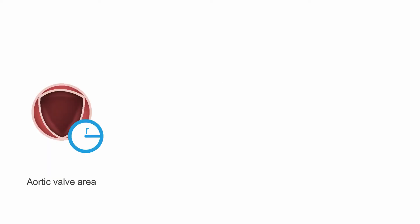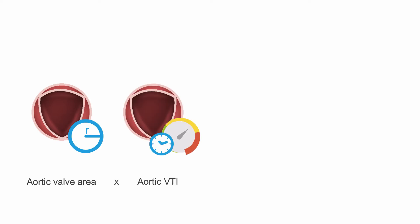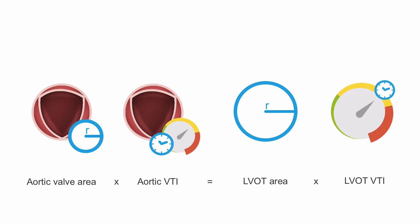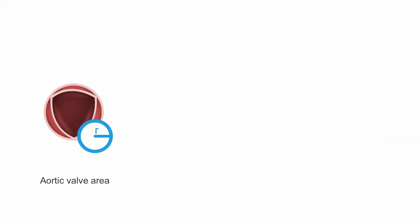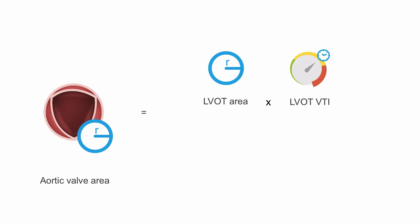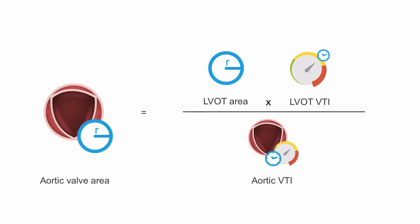Therefore, the aortic valve area multiplied by the VTI of the aortic valve equals the left ventricular outflow tract area multiplied by the VTI of the left ventricular outflow tract. The equation can be rewritten so that the aortic valve area equals the left ventricular outflow tract area multiplied by the VTI of the LVOT and divided by the VTI of the aortic valve.